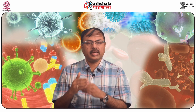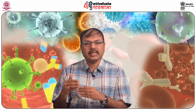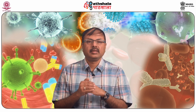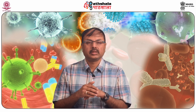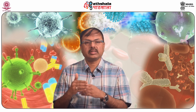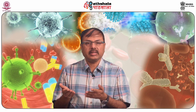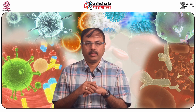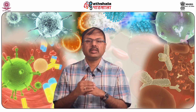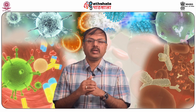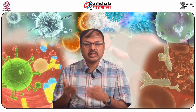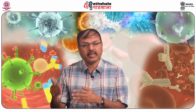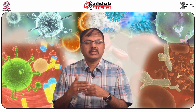TC cells or killer T cells: a T cell that attaches to infected cells and cancer cells and kills them. Leukocytes: white blood cells such as monocytes, neutrophils, eosinophils, basophils, lymphocytes — any type of WBC. Lymphocytes: white blood cells responsible for acquired immunity, including producing antibodies, distinguishing self from non-self, and killing infected cells and cancer cells.